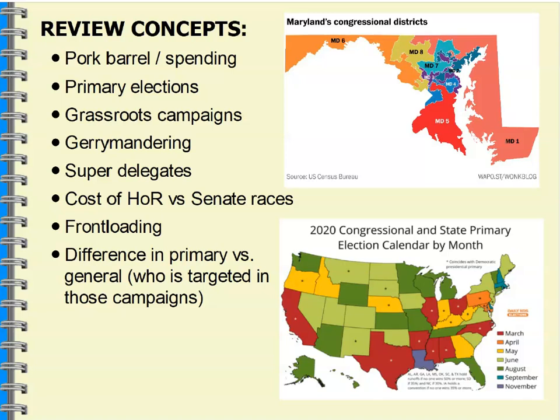Front-loading is the idea that races go earlier and earlier, closer to the Iowa caucus and New Hampshire primaries. We saw Nevada and South Carolina move theirs up. After the debacle in Iowa this year — the app that didn't work correctly — I wouldn't be surprised if the Democratic and Republican parties decide to mix things up, especially since Iowa and New Hampshire aren't very diverse or representative of the parties today.